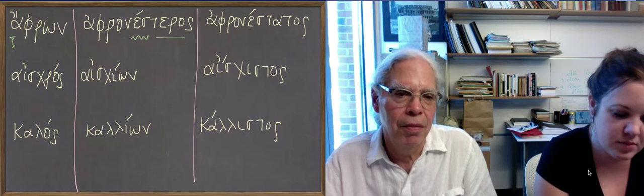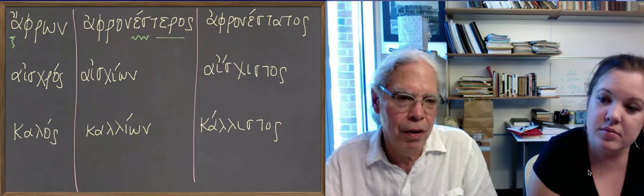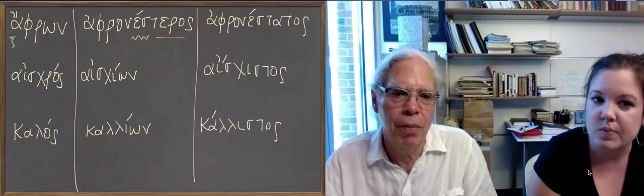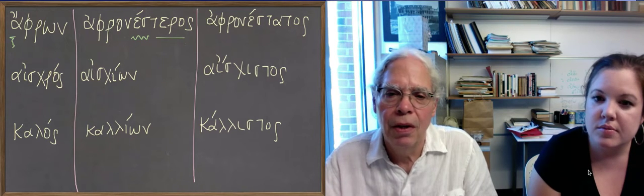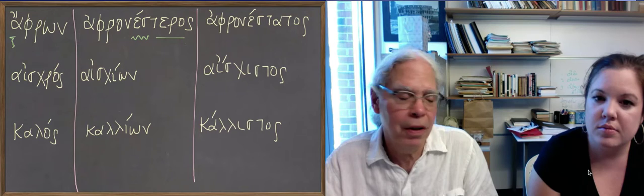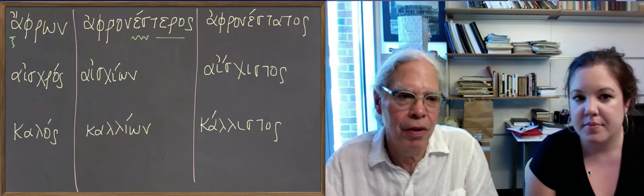But other own third declension adjectives like eudaimon do the same thing: eudaimonesteros, eudaimonestatos. Okay, so it's a matter of becoming familiar with these possibilities and not getting thrown by them when you see them. You can trust yourself.